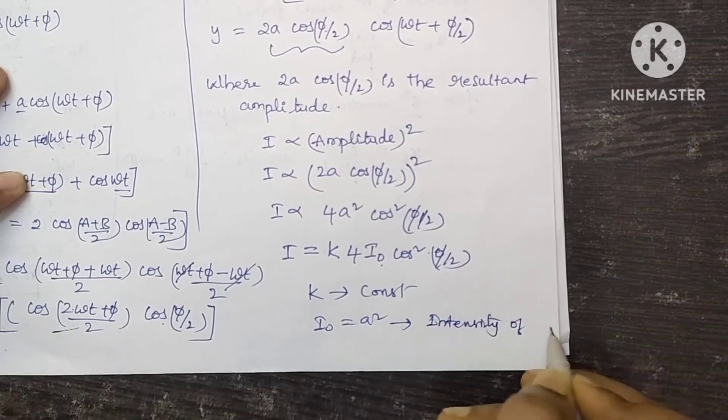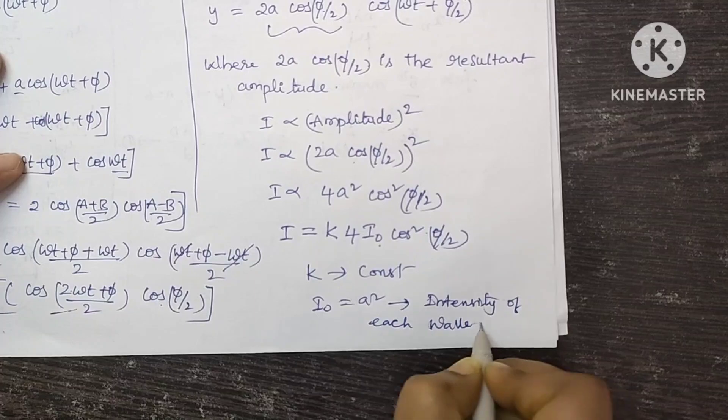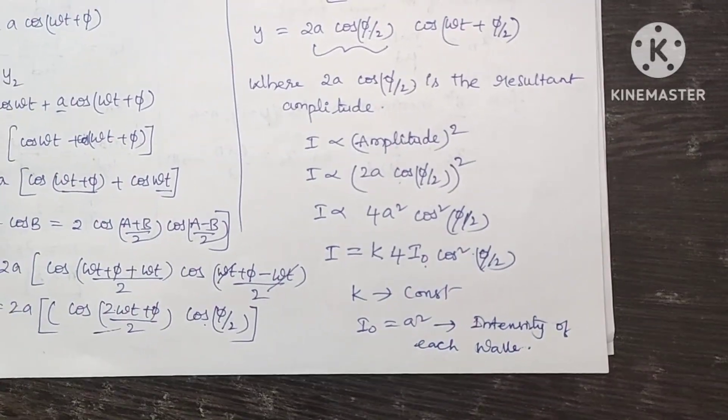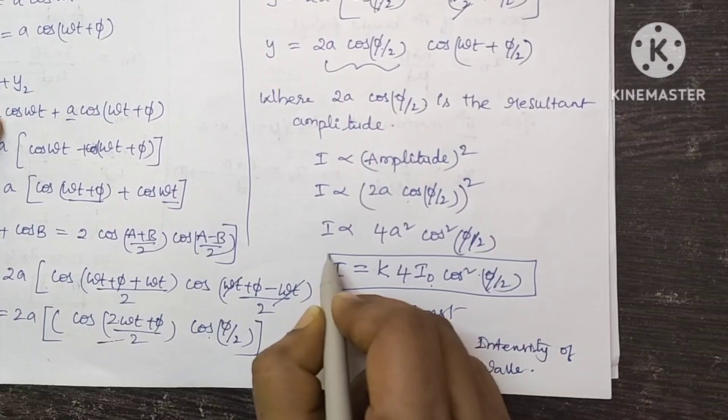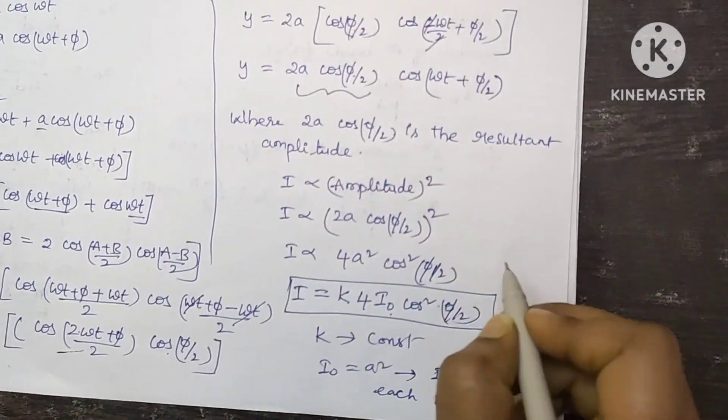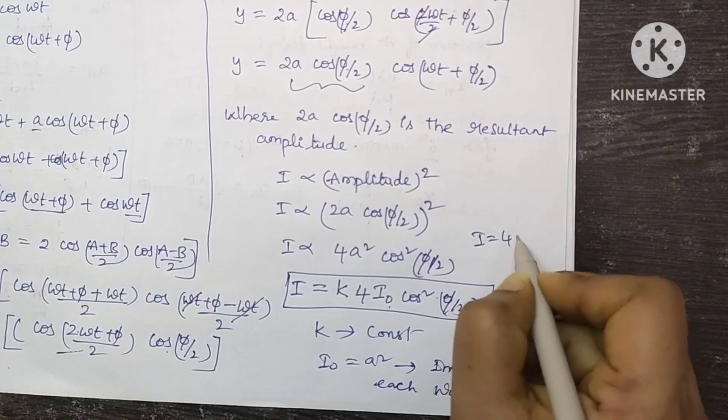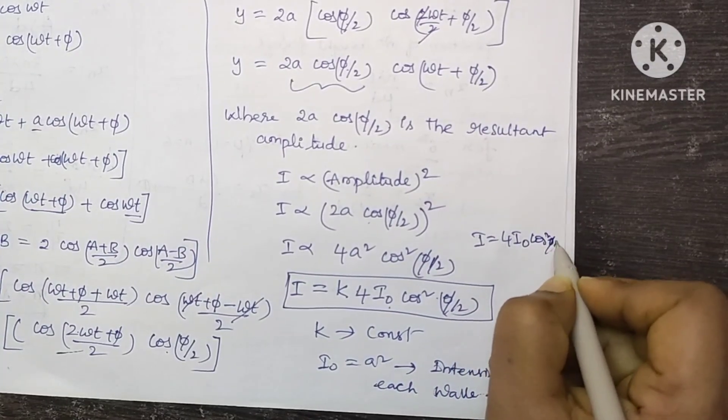Intensity of each wave. I hope this is clear. This is the resultant intensity. We can also rewrite this equation as I equals 4I0 cos square phi by 2.